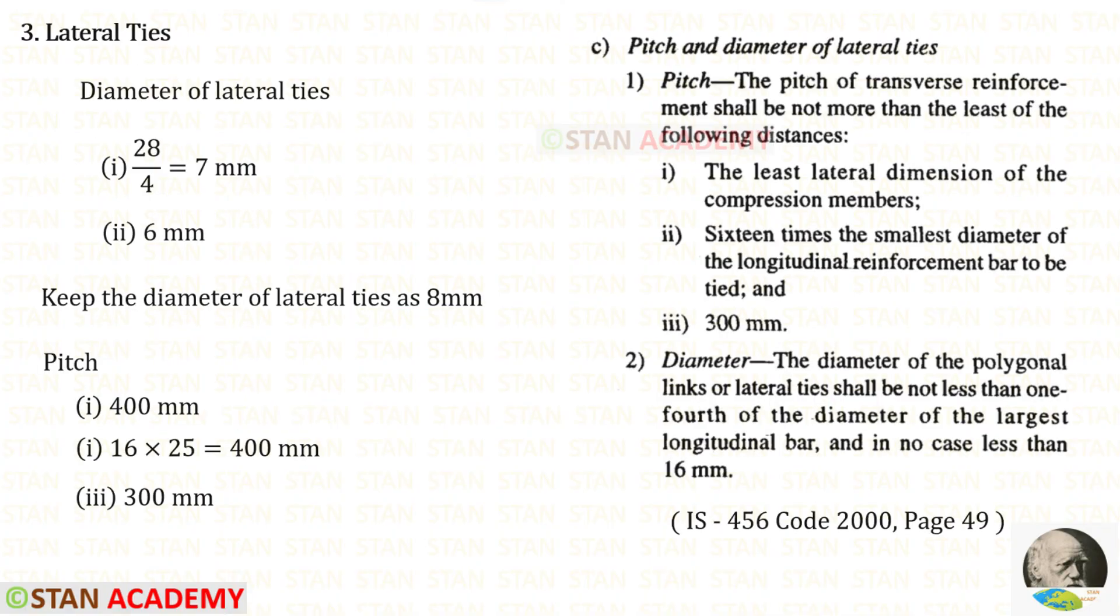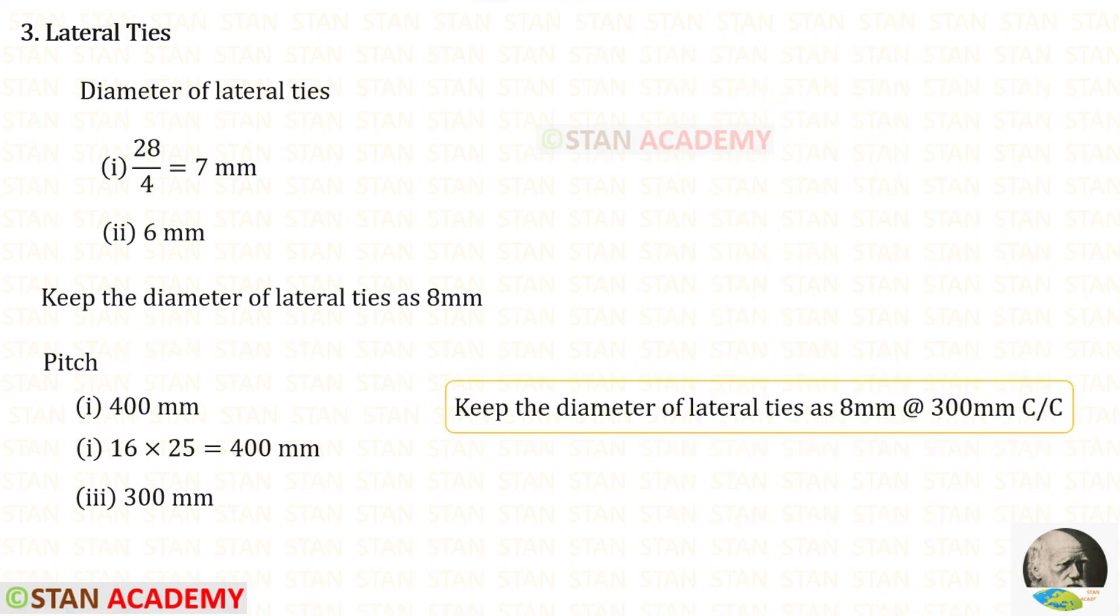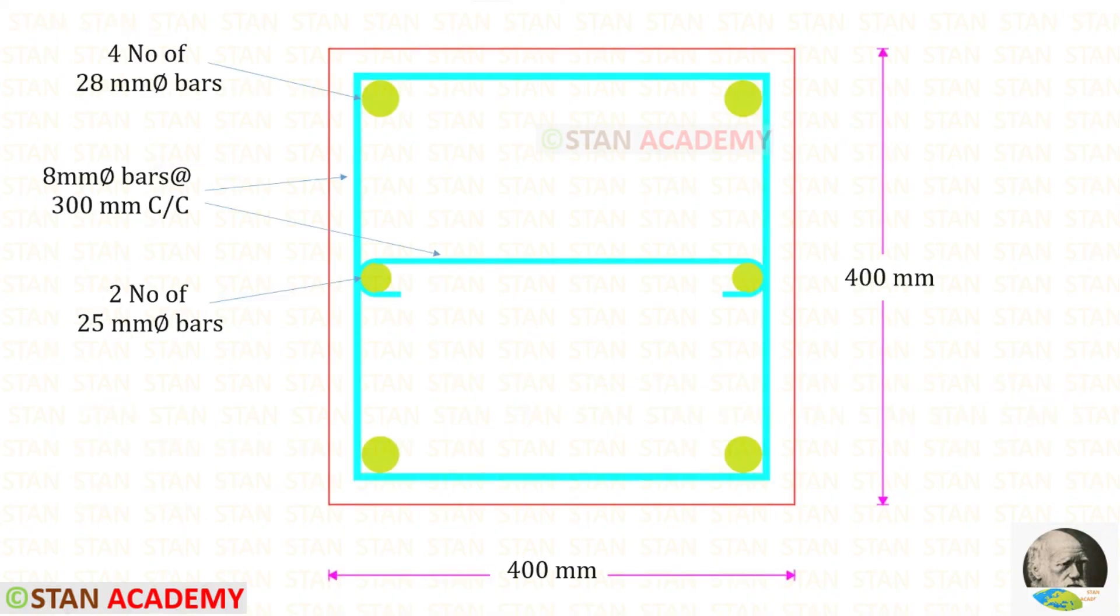We know how to design the diameter of the lateral ties and its pitch. Let us keep the diameter of the lateral ties as 8 millimeter with the spacing of 300 millimeter. Here you can see the cross section. For these two bars we can provide an open tie.